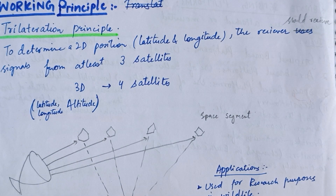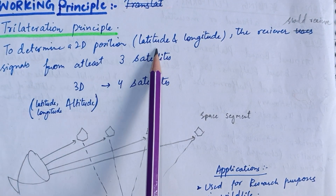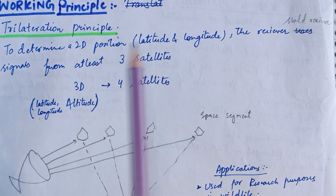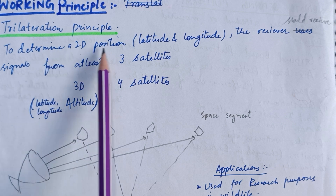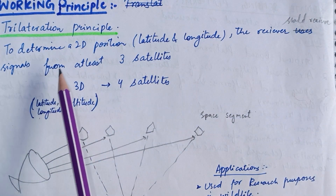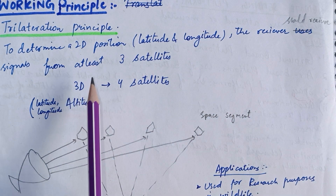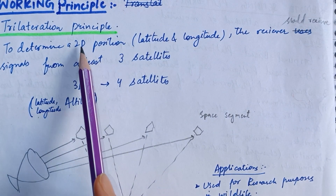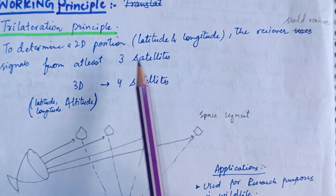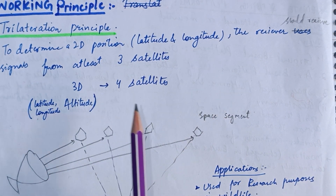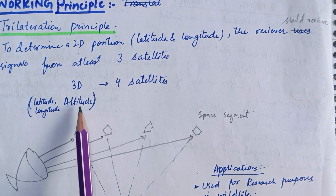GPS works on the trilateration principle. To determine a 2D position — latitude and longitude — the receiver should receive signals from at least three satellites. To determine a 3D position, the receiver should receive signals from at least four satellites. A 3D position means latitude, longitude, and altitude.